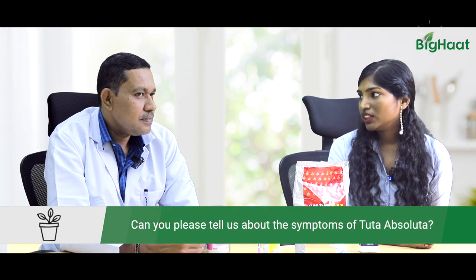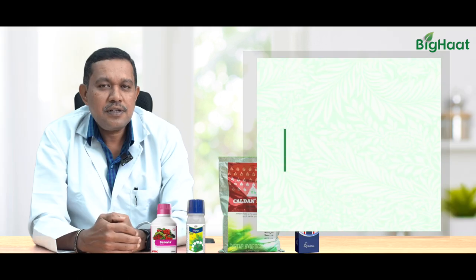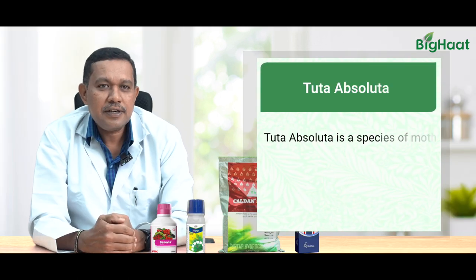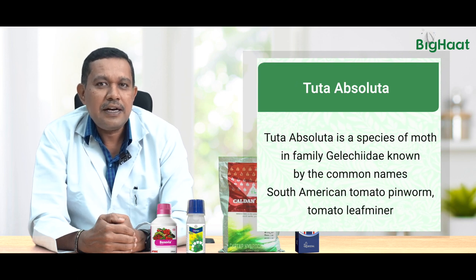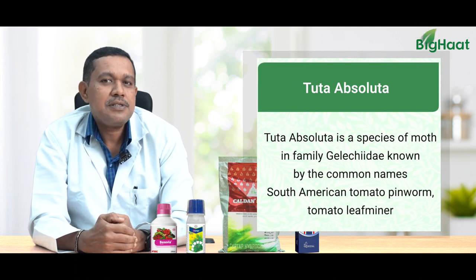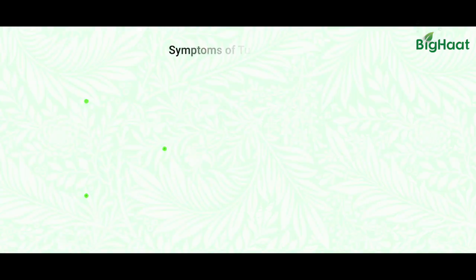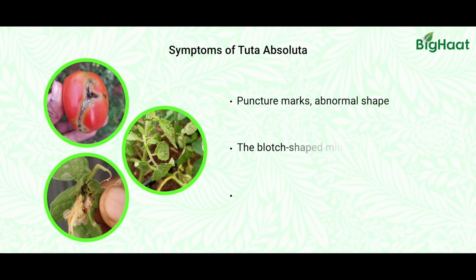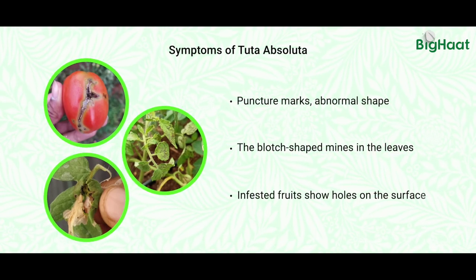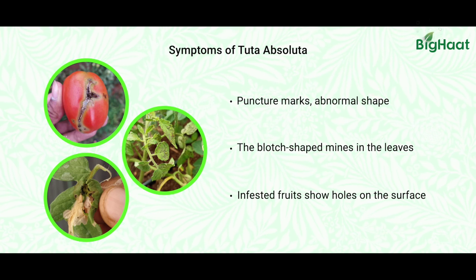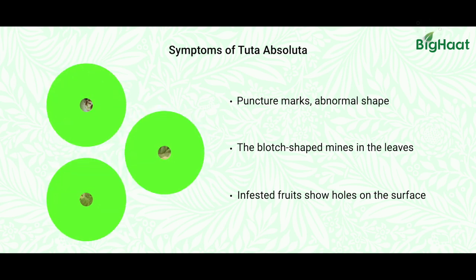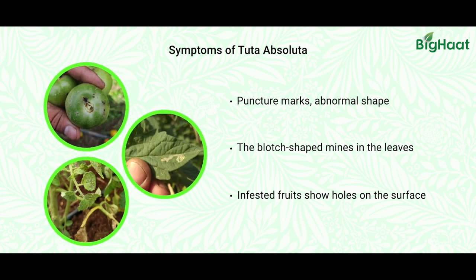Can you please tell us about tuta and its symptoms? Tuta is a lepidopteran insect which attacks tomato. The symptoms on tomato crop resemble leaf miner symptoms, but with leaf miner only about 10% of the leaf is infested. In the case of Tuta absoluta, even though the symptoms are similar, the intensity of infestation will be 90%, and the damage is more severe — it can also infest the branches.